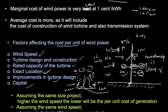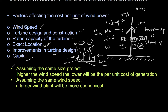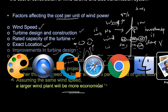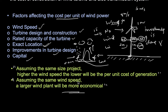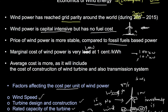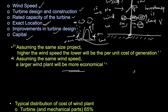Two key assumptions: assuming the same project size, higher wind speed means lower cost per unit of generation. And assuming the same wind speed, a larger wind plant is more economical. A single 10-megawatt tower is more economical than twenty 0.5-megawatt towers needed to generate the same 10 megawatts. These are basic first-level observations about the economics of wind energy.